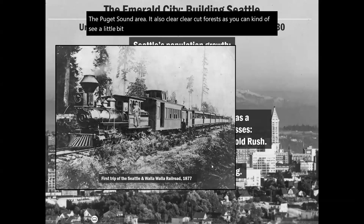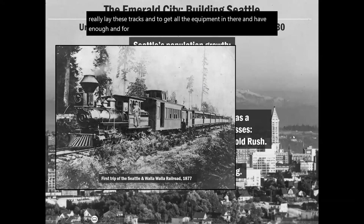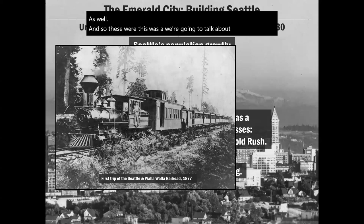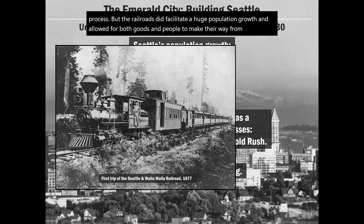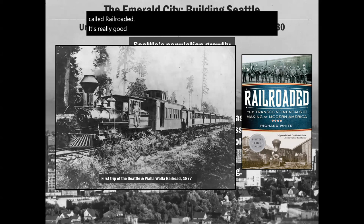Clear-cutting worsened flooding and increased sediment levels in waterways. This was a massively ecologically devastating process. But the railroads did facilitate huge population growth and allowed goods and people to move from the East and other parts of the West to Seattle. Richard White — who you read in 'The Organic Machine' — also wrote a big book called 'Railroaded,' which is probably his best work covering the political, economic, and environmental history of railroads.